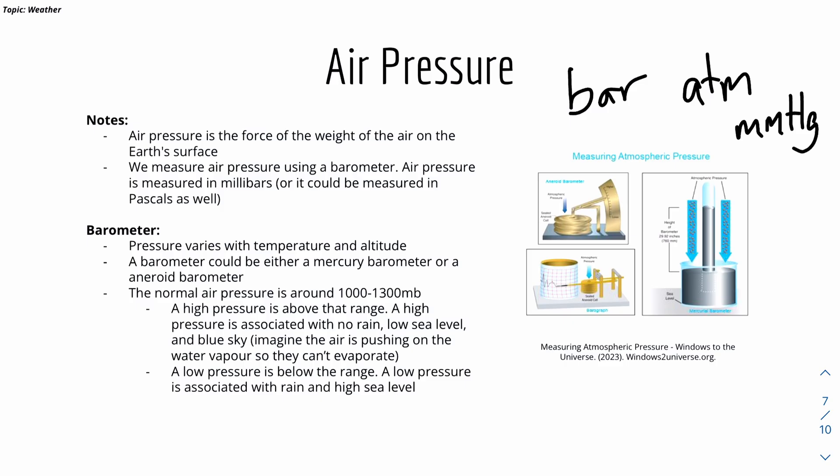Conversely, the opposite would be low air pressure, where it means that it's associated with high rain and high sea level. As the air isn't pushing that much on the earth's surface, this means that water can evaporate, which forms rain and therefore high sea level.